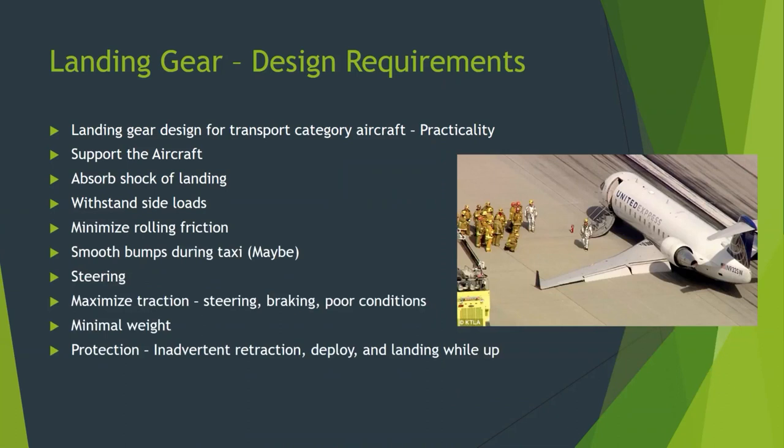The landing gear is designed for practicality. Weight is kept to a minimum while still being able to support the aircraft and absorb the shock of landing. It also needs to withstand side loads in the event of a crosswind landing. Minimizing rolling friction is important for takeoff. It does a certain amount of smoothing bumps during taxi, but transport aircraft ride pretty rough on the ground because the shock absorption has to be fairly stiff to absorb the energy of planes weighing anywhere from 50,000 to close to a million pounds during landing.